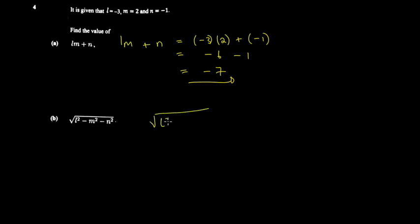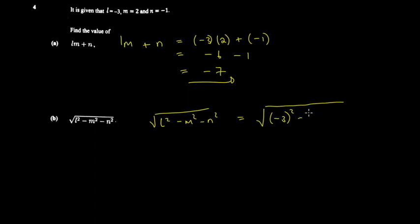On this one you're asked to find the square root of l squared minus m squared minus n squared. Again, you do substitution using brackets. So l is negative three — I'll put negative three squared — minus m, which is two — I'll put two squared — then n, which is negative one, squared again.